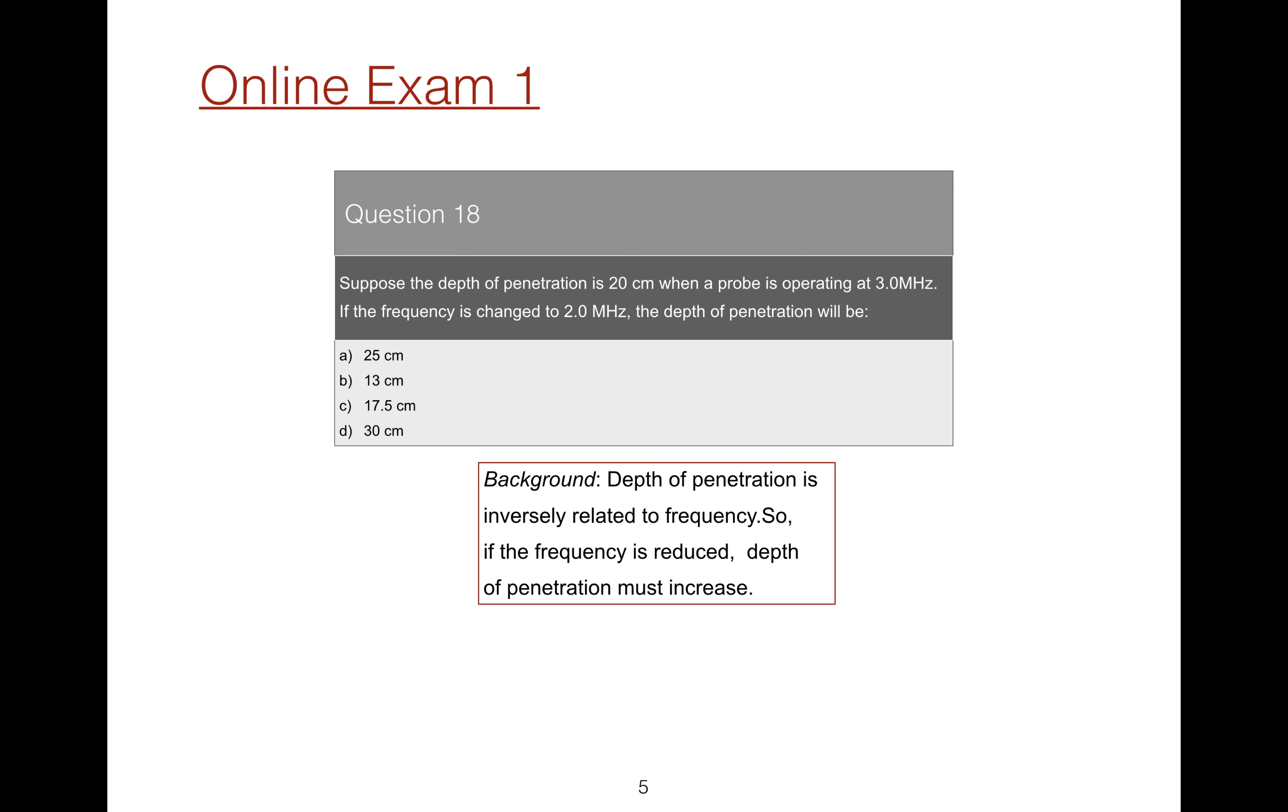Moreover, the depth of penetration multiplied by the frequency is constant. So to answer the question, we know that at 3 MHz the penetration is 20 cm. 3 times 20 equals 60. We want to know the penetration at 2 MHz, so we rearrange the equation. P2, that is penetration we want to know, will be 60 divided by 2 MHz, 30 cm.